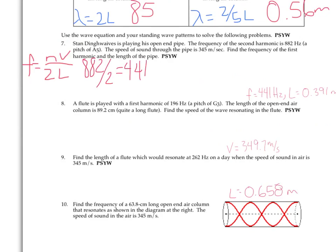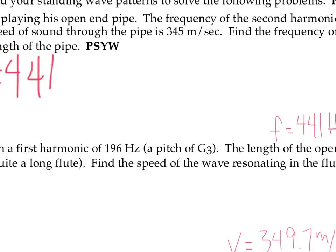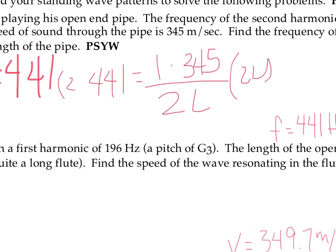So start by taking your 882 and dividing it in half to get your 441 hertz first harmonic. And then solving for frequency and length is using this equation here. So if the frequency of 441 hertz is equal to the number of the harmonic, which in this case is 1, times the velocity, which was given to us as 345, divided by 2 times the length. So we need to do a little algebra here. You can cross multiply if you want, or you can multiply both sides by 2L.